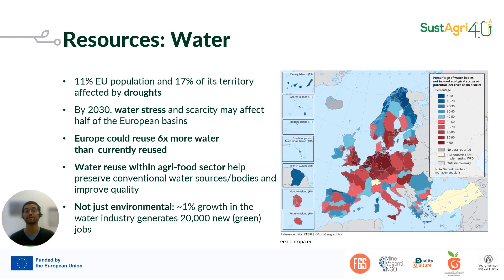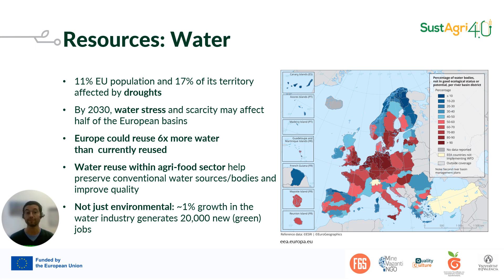The interest in promoting reuse at the European level is based on data such as those shown here. In the case of water, the European Union already finds itself with a significant proportion of its population and territory affected by drought, and forecasts indicate that the situation will worsen. However, the European Union still has the possibility of multiplying by 6 the amount of water that is reused, so it has a significant margin to increase the use of this non-conventional resource. The agri-food sector would be one of the great beneficiaries if the availability of this resource increases.